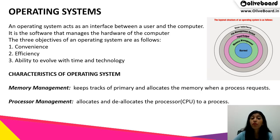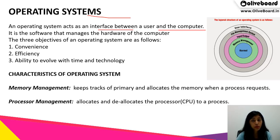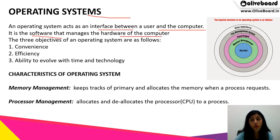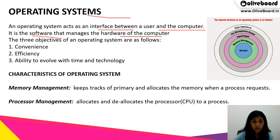Now we have operating systems. An operating system acts as an interface between a user and a computer. There is an operating system installed in the computer that helps us interact with it. It is a software which manages the hardware of the computer, and anything that needs processing is done by the operating system.